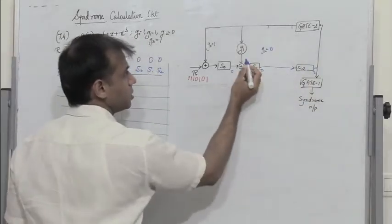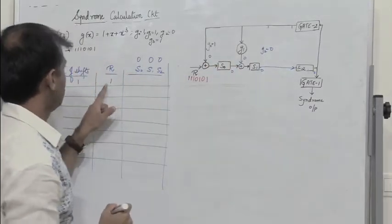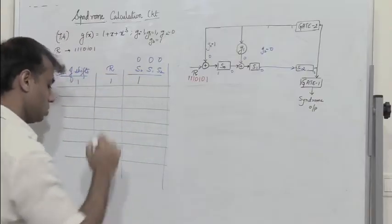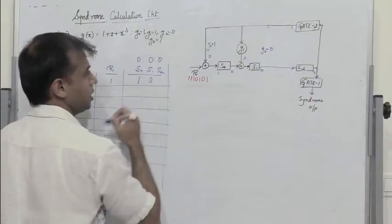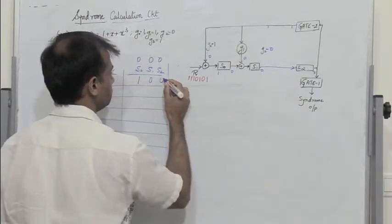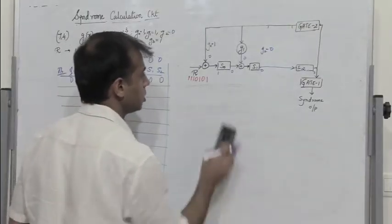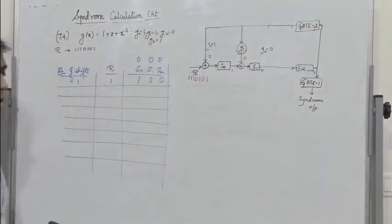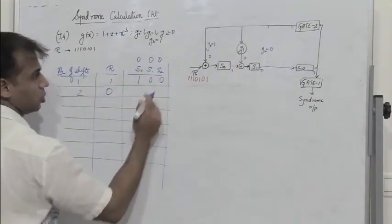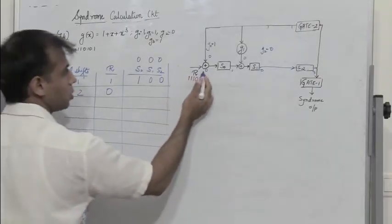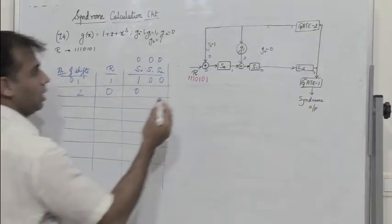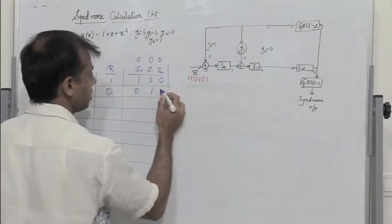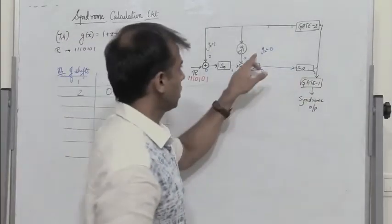After shift 1, the outputs of S0, S1, S2 are 1, 0, 0. During shift 2, the next received bit is 0. The feedback is 0, so the input to S0 is 0 XOR 0 = 0. S1 receives the previous output of S0, which is 1, so 1 XOR 0 = 1. S2 takes the previous state of S1, which is 0. After shift 2, the outputs are 0, 1, 0, with 0 coming in the feedback path.